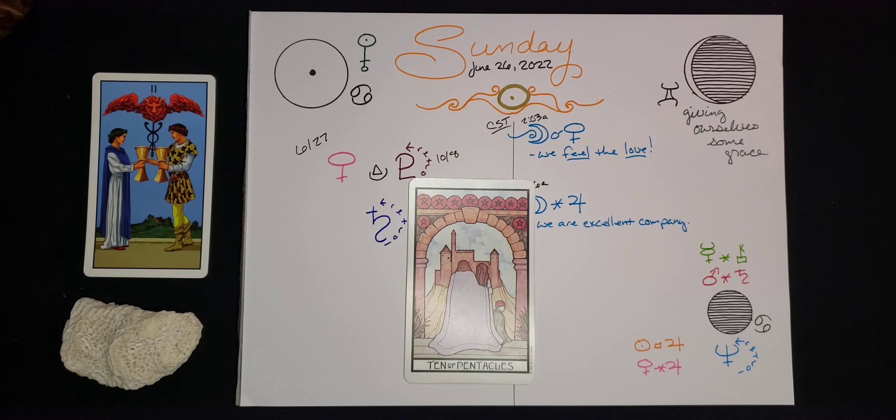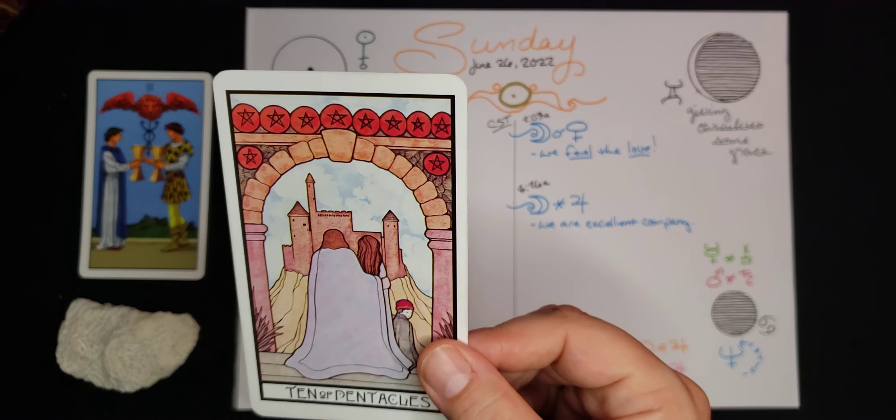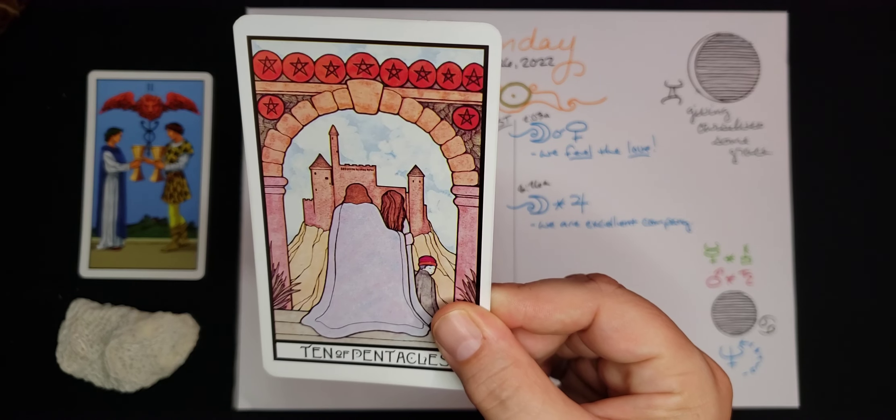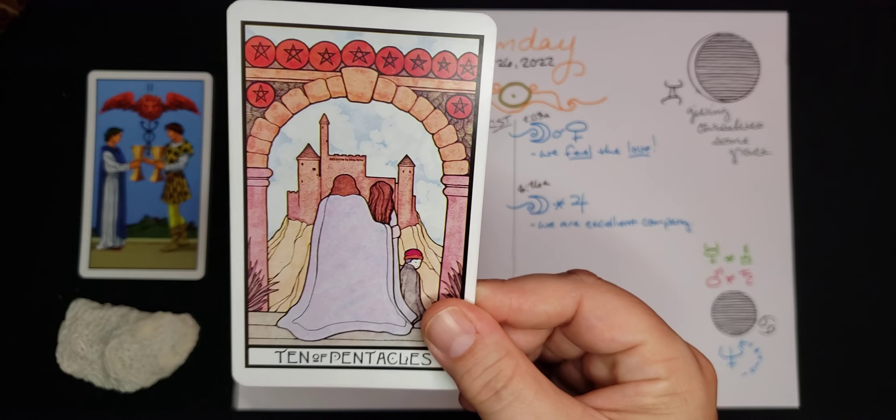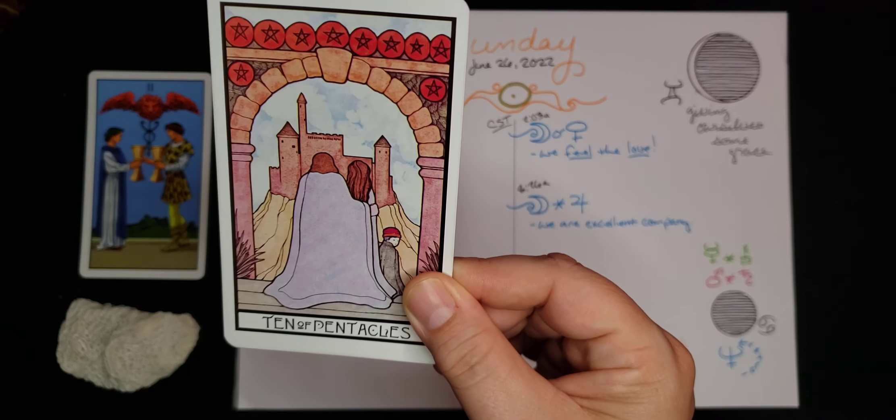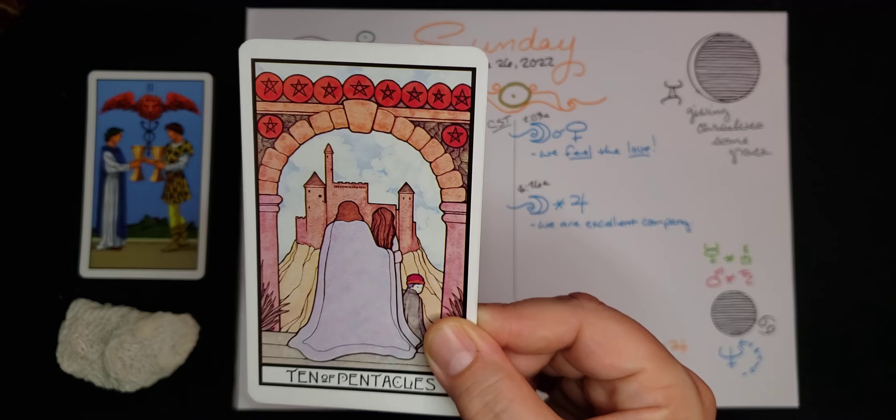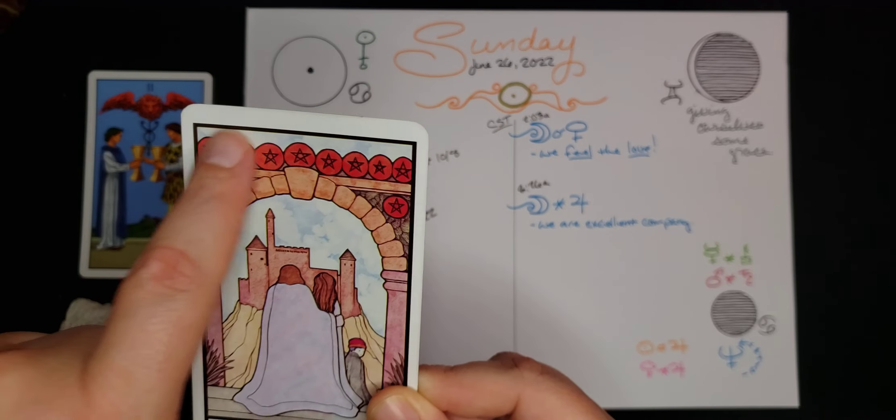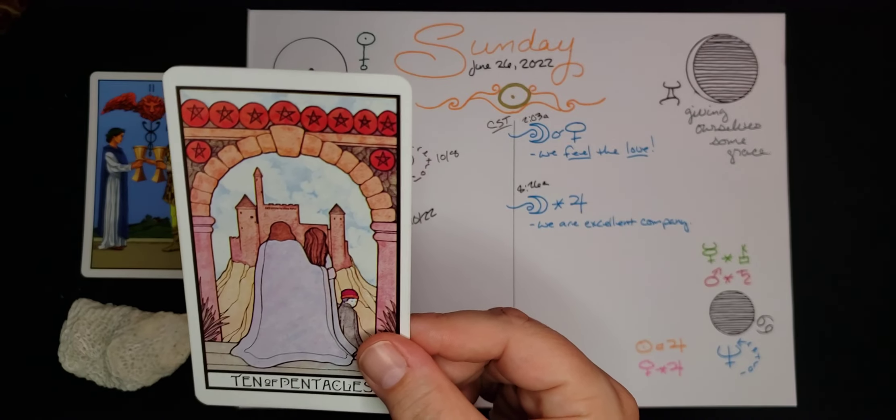So the Ten of Pentacles really speaks to me to this Saturn retrograde. It's really just asking us to, again, examine those structures we personally rely on in the context of community, to check to see if they're firm. We want things put together well. And what always draws my attention in this card, the Ten of Pentacles represents sort of ultimate security and stability, ultimate sort of financial success where you've got your happy family and you've got your castle with the moat there on the mountaintop. And you've got your gate that is all festooned with pentacles, with coins to show how well you have done.